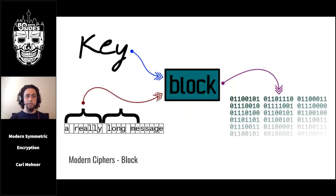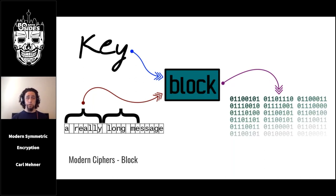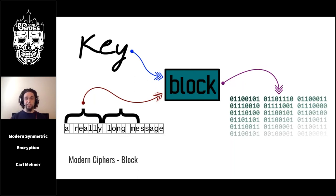Now let's turn to block ciphers. This algorithm takes in data and a key and outputs an array of random-looking bits. Block ciphers have desirable security properties: with a secret key, a message goes in and random data comes out — exactly what we want. But if the same message goes into the block cipher every time, the output is also the same every time. Each block of output is very random-looking — but only if you look at each block by itself.